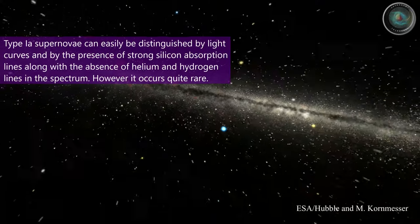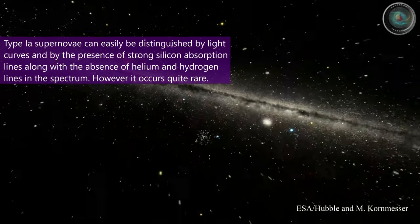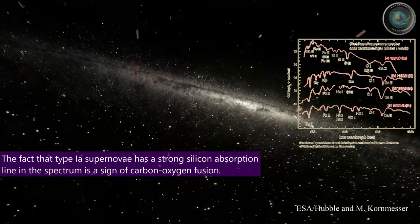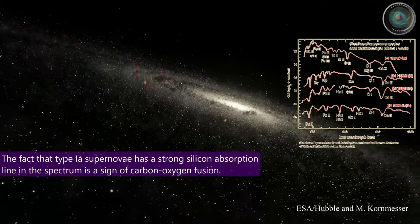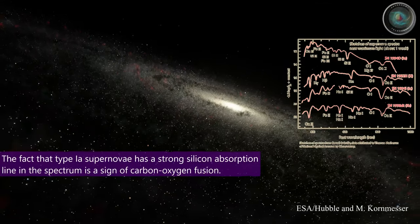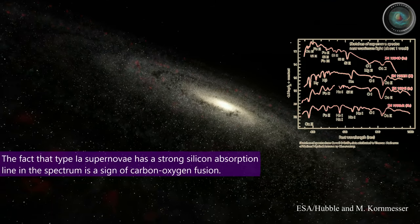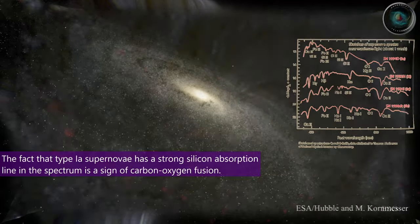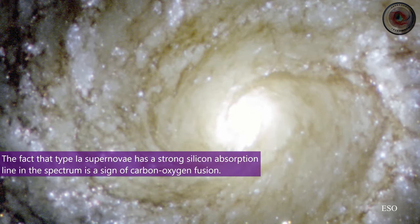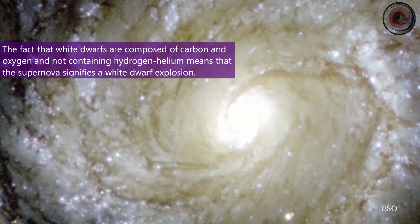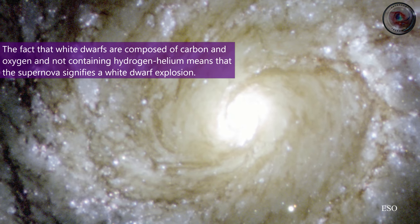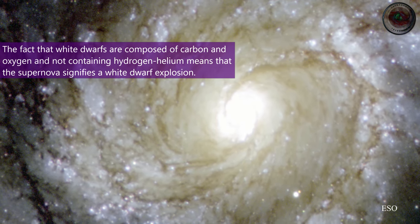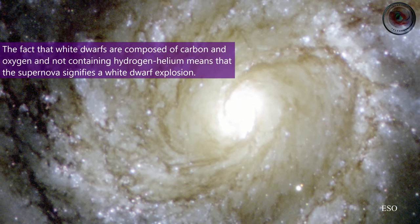However, it occurs quite rarely. The fact that Type 1A supernovae have a strong silicon absorption line in the spectrum is a sign of carbon-oxygen fusion. White dwarfs are composed of carbon and oxygen and do not contain hydrogen or helium, which means that this supernova signifies a white dwarf explosion.